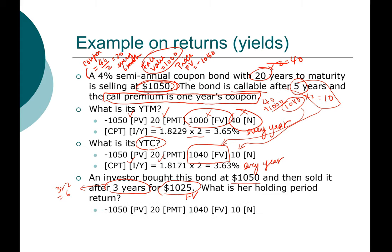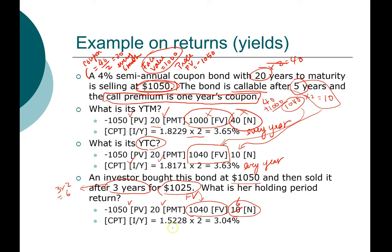Her holding period return can be computed as follows. The price is the same and the coupon payment is the same. What is different is the future value — when computing the holding period return, the future value is the future selling price of $1,025. The time period is how long she held on to the bond, which is six semi-annual periods. When we compute the interest, we get 1.52% every six months, or 3.04% per year.